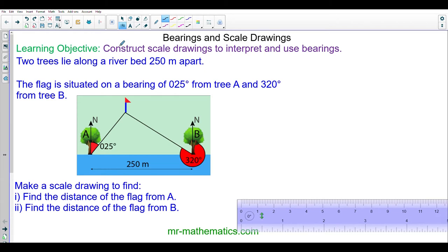To begin with we need to choose a suitable scale. The scale I'm going to choose is 1 centimeter equals 50 meters. The real life distance is 250 meters, which means our scale has to be 5 times 50 to make 250. So 1 times 5 is going to be 5 centimeters. The horizontal distance between the two trees will be 5 centimeters in our scale drawing.